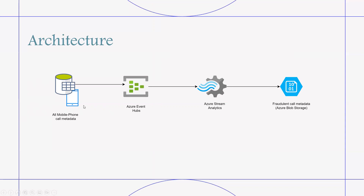Step one: the mobile phone call metadata is sent from the source system to an Azure Event Hubs instance. Here in the architecture you can see our source system — mobile, database, or any metadata. All data is accessed from the source and kept in Azure Event Hubs.